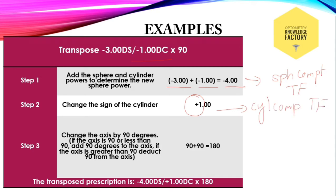The last step: change the axis by 90 degrees. Here the axis is 90. When the axis is 90 or lesser than 90, add 90 degrees to find out the axis of the transposed form. Here, 90 plus 90 is 180. This is the axis of the transposed form. So the transposed form of minus 3 diopter sphere with minus 1 diopter cylinder at 90 is minus 4 diopter sphere with plus 1 diopter cylinder at 180.